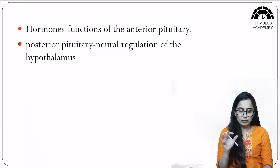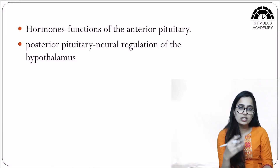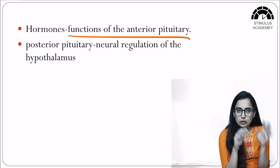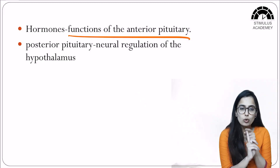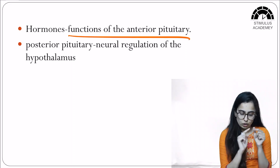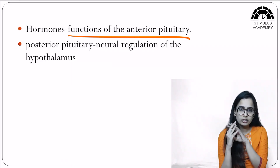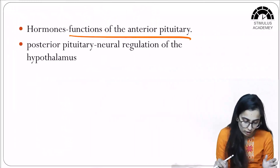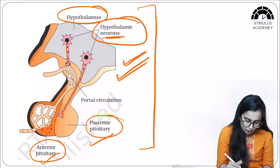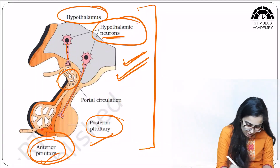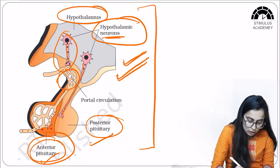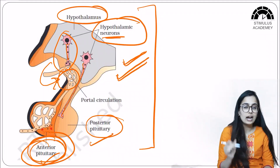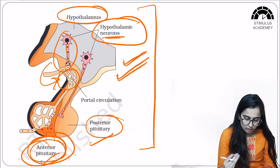The function of hypothalamic hormones is to regulate the functions of the pituitary. The hypothalamus regulates the pituitary in two ways: through hormones and through neural regulation. The hormones are released into portal circulation, which carries the secretions to the anterior pituitary and thus regulates its functions.